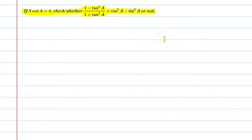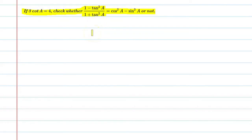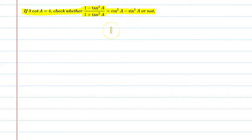So basically, what is said? If we have this condition that 3 cot a is equal to 4, we need to check whether these two expressions are equal or not. We find tan square a value with the help of the given condition, and we need to know the values of cos a and sine a in this equation form. So let's start with our question.